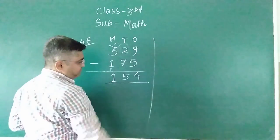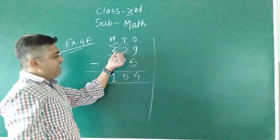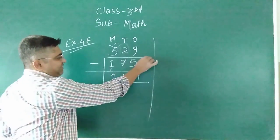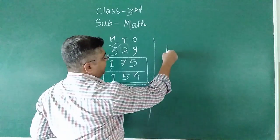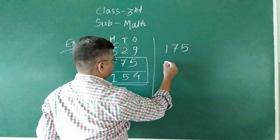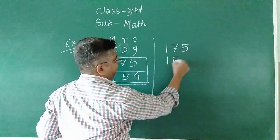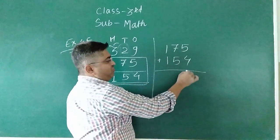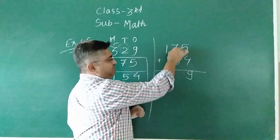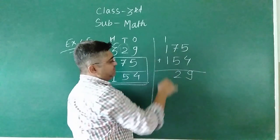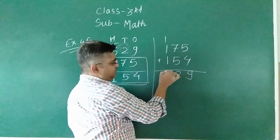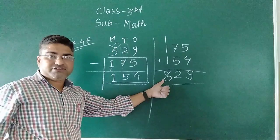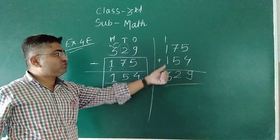So what will we do next? This number, we see that 175 was minused. So what do we do? Here, 175 plus 154. See here: 5 plus 4 is 9, 7 plus 5 is 12, write 2 carry 1. 1 plus 1 is 2. So this is our answer. In this way we have to solve it.